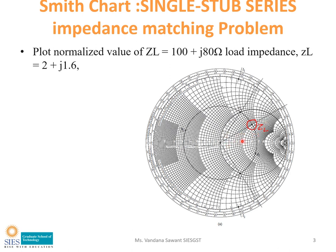To plot 2 plus J1.6, find where the number 2 is on the horizontal line and go along that circle in the vertical direction. Similarly, find the vertical circle plus J1.6 — since it is positive, it is in the upper half. The intersecting point of the R equals 2 circle and the J1.6 circle will be your ZL. If you want to know the basics about how to plot a point and find wavelengths, refer to my video on basics of the Smith chart.